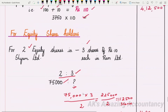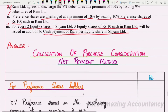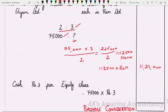In addition to equity shares, there is also a cash component. As per the problem, a cash payment of ₹3 per equity share in SHAM Limited is to be made. There are 75,000 equity shares, so the cash payment will be 75,000 × ₹3 = ₹2,25,000.